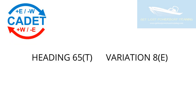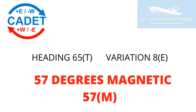Here's another example going from true to magnetic: a heading of 65 degrees true with an 8 degree easterly variation. Looking at the CADET picture, I'm going from true to compass, so I'm going to take away east. 65 degrees true minus an 8 degree easterly variation gives me a heading of 57 degrees magnetic that I can follow on the compass.